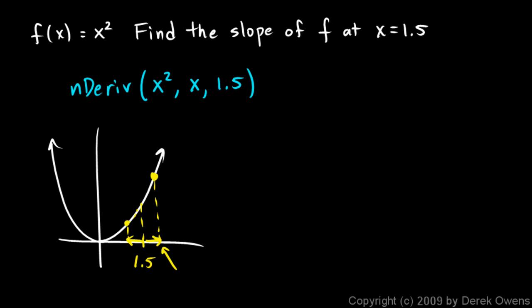Or I guess 1.501 and 1.499. And it's going to calculate those y values based on the function we've told it to use. And then it will do a rise over run, and that will be an approximation to the slope at this point.